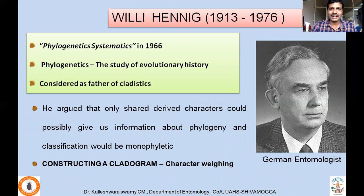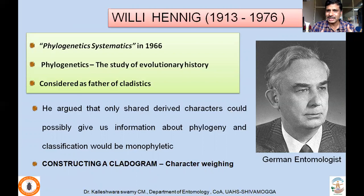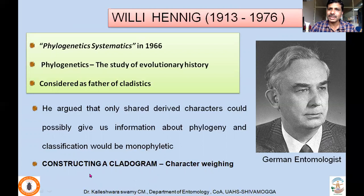Hennig gave a wonderful idea of bringing phylogenetics into classification so that natural classification can be achieved. As we know, phylogenetics is the study of evolutionary history. He argued that only shared derived characters could possibly give us information about phylogeny, and classification would become monophylogenetic. To use shared derived characters — characters that are shared and derived over the years from a common ancestor — all descendants of that particular ancestor should be included in the classification so that whatever classification we make is actually monophyletic. Based on his idea, he also gave a technique for constructing the cladogram based on character weighting.